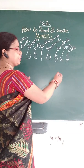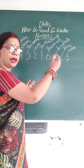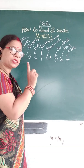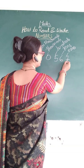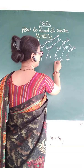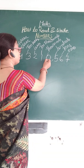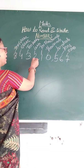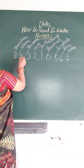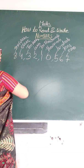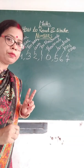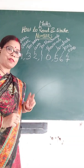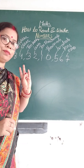In the Indian system, from the right side, the first group is three digits — ones, hundreds, one thousand, ten thousand — then comma, then lakh, ten lakh — comma — then crore, ten crore. So first time three digits, then after two, two, two digits.